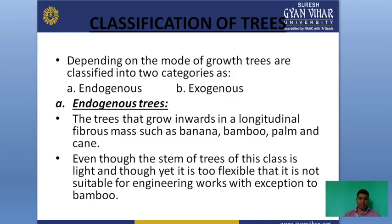Now discussing trees used in construction. Endogenous trees grow in a longitudinal fibrous mass, such as banana, bamboo, palm, and cane. Even though the stems of these trees are light and though flexible, they are not suitable for engineering work, with the exception of bamboo. Endogenous trees are those that grow in the inward direction.